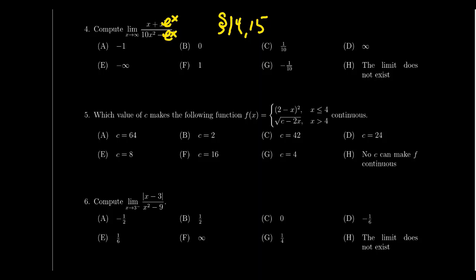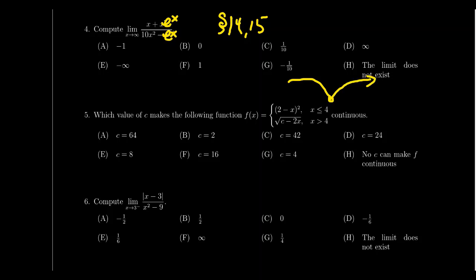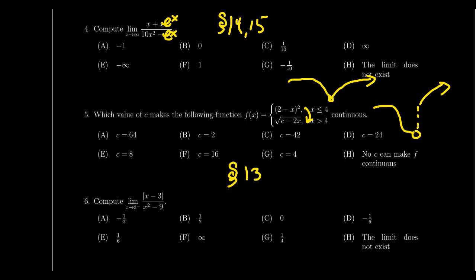Question number five is going to be about piecewise functions and continuity. There's a parameter c inside the piecewise function, and we're asking what choice of c will make it continuous. The key to making a piecewise function continuous is that as you go from one piece to the other, the branches need to be touching — if they're not touching, there will be a jump discontinuity. We have to find the value of c that makes the left-hand limit and right-hand limit agree at x = 4. This is exactly like the first example of lecture 13, which covers continuity in detail.